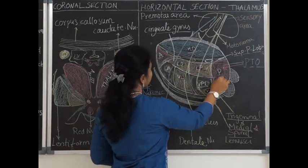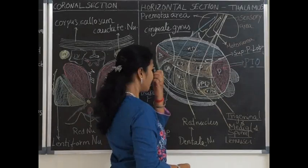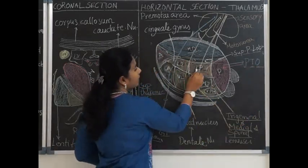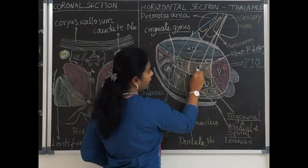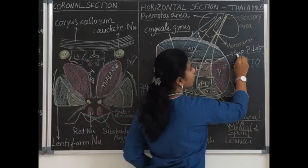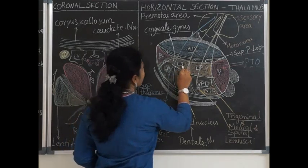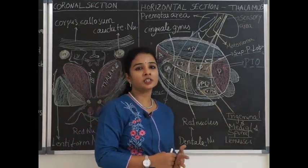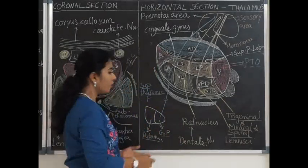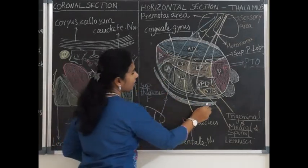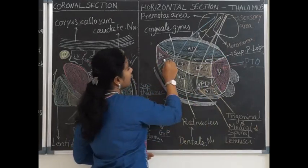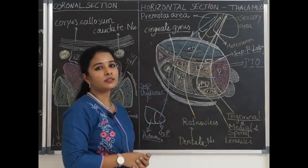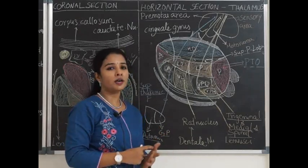In the dorsal tier, the pulvinar has efferents and afferents from the parietal, temporal and occipital cortex. The lateral posterior nucleus has connections with the superior parietal lobule. The lateral dorsal nucleus has connections with the cingulate gyrus. The reticular formation has connections with the brainstem and further connects to all parts of the brain. The midline nuclei, reticular nuclei and intralaminar nuclei including the centromedian nucleus all connect with the brainstem reticular formation and further project to all parts of the cortex.